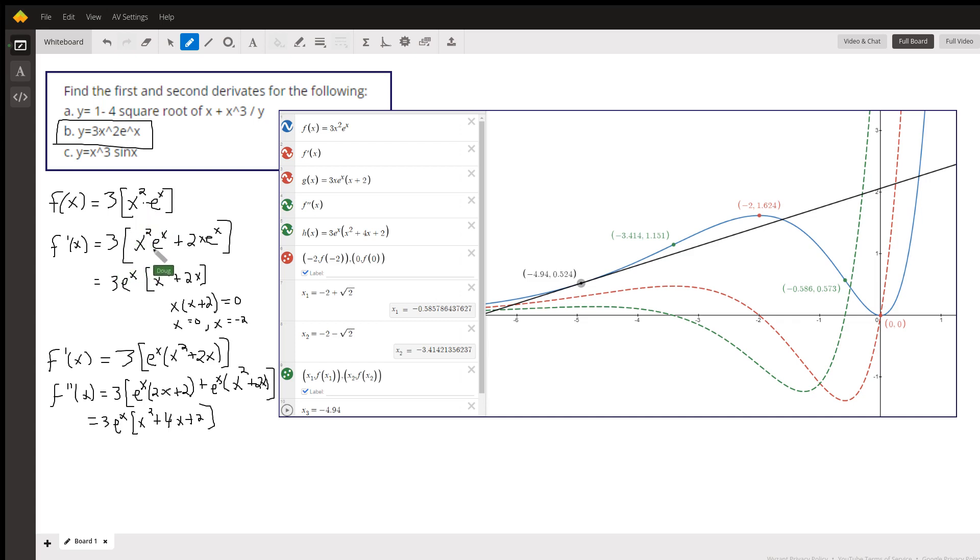So, 3 times the derivative of x squared e to the x: first function times the derivative of the second, plus the second function e to the x times the derivative of the first. Now you might notice that over here I factored out an x e to the x.